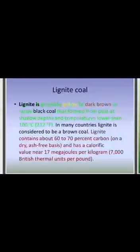Second, lignite coal. Lignite is generally yellow to dark brown or rarely black coal that formed from peat at shallow depths and temperatures lower than 100 degrees Celsius. In many countries, lignite is considered to be a brown coal. Lignite contains about 60 to 70 percent carbon and has a calorific value near 17 megajoules per kilogram.